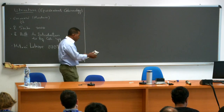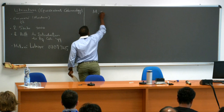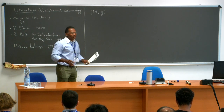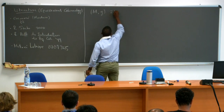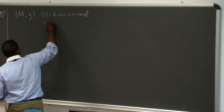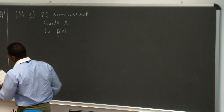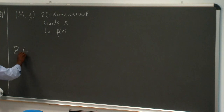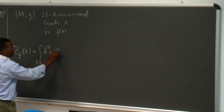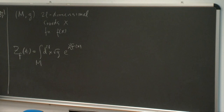Let me spend a few minutes talking about the setup. I'm going to take some manifold M, maybe with a metric — I'm going to call it 2N-dimensional. I'll put some local coordinates x, and consider some function f. The kind of integrals we're interested in depend on some parameter t, and they are integrals over this manifold of dx times the square root of g, times e to the t f of x.